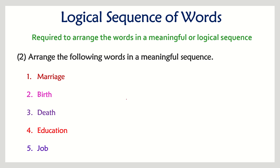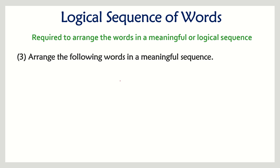Obviously, birth will be the first in the sequence. Once you take birth, your education starts — so number four is second. Once you finish your education, you generally look for a job, so five is next. After a job, you plan to get married. And after your lifetime is completed, we die. So that is the correct sequence.